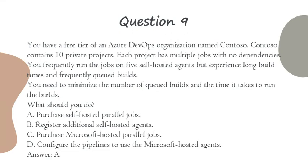Question 9. You have a free tier of an Azure DevOps organization named Contoso. Contoso contains 10 private projects. Each project has multiple jobs with no dependencies. You frequently run the jobs on 5 self-hosted agents but experience long build times and frequently queued builds. You need to minimize the number of queued builds and the time it takes to run the builds. What should you do? A. Purchase self-hosted parallel jobs. B. Register additional self-hosted agents. C. Purchase Microsoft-hosted parallel jobs. D. Configure the pipelines to use the Microsoft-hosted agents. Answer: A.